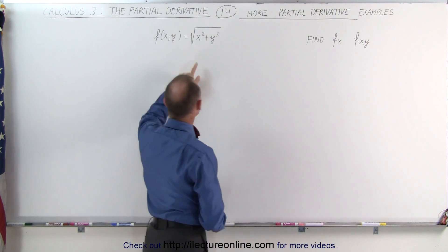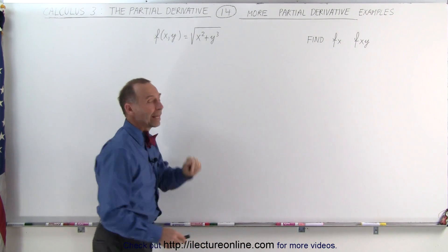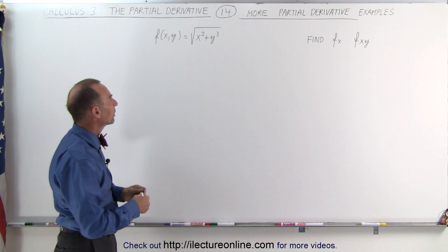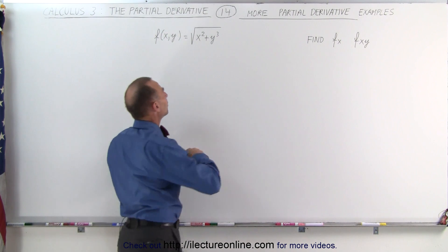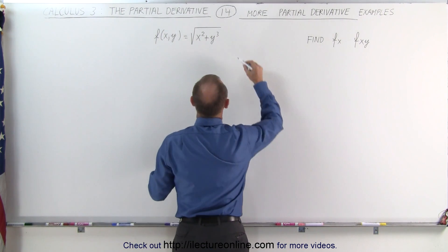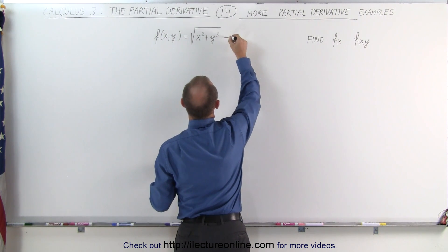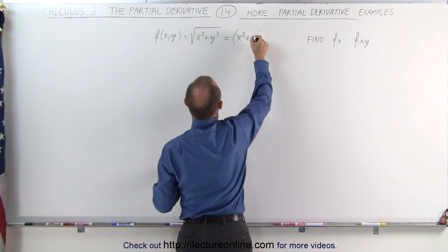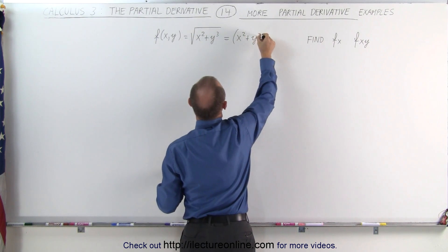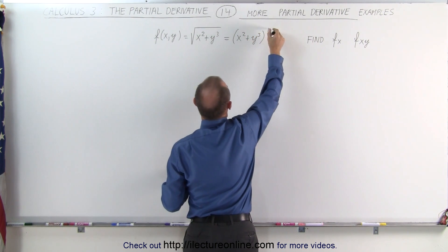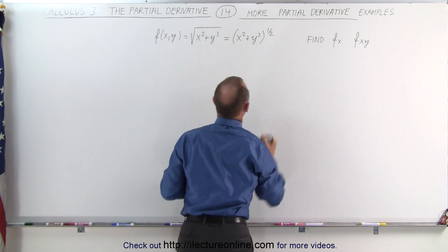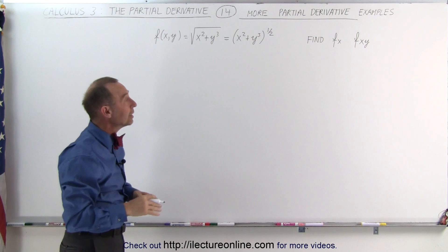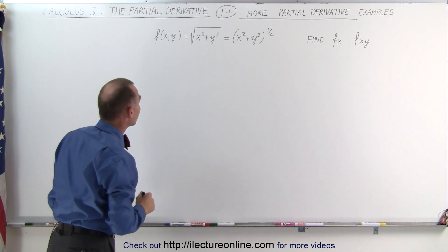In this case the function has a radical in it. I always recommend that if you see a function with a radical, you rewrite it as an exponential. This can now be written as x squared plus y cubed to the one-half power. We'll have to use the chain rule when we take the partial derivative.